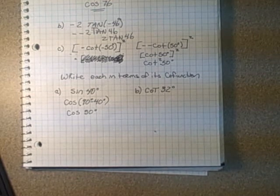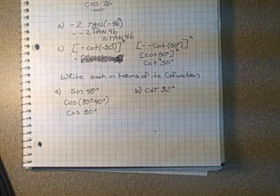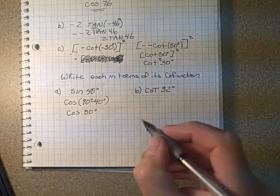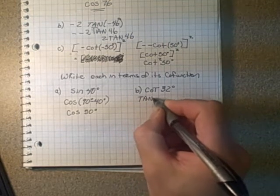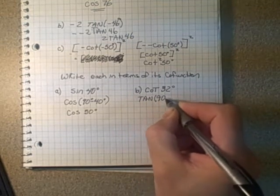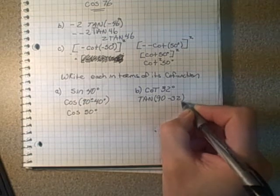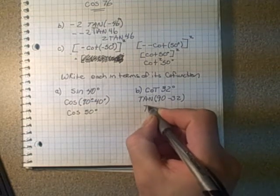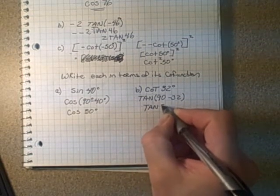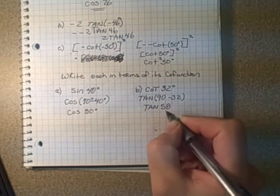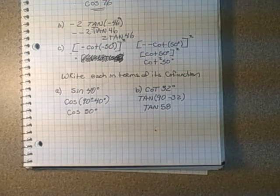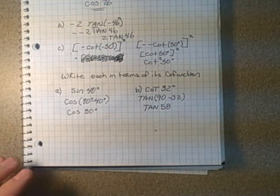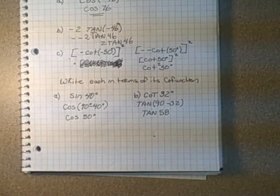Same thing with cotangent. Cotangent has a co-function of tangent. So cotan of 32 would be the same as tan of 90 minus 32, which is tan of 58. We could check that but you don't have cotangent on the calculator — we'd have to go 1 over tan, so we'll leave that one.